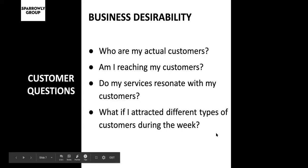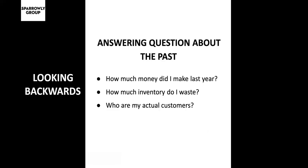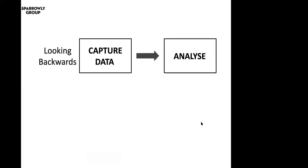So these are all really great questions, but how can we use data to answer them? Well, to help us with this, we're going to break up our questions into two different types. The first type of questions are those that reference the past — answering questions that require us to look backwards. Questions like how much money did I make last year, how much inventory do I waste, who are my actual customers — these are all questions about the past. Answering these types of questions requires two steps: first, capturing data, followed by analysing data. The trick is that you need to capture data before you can analyse it. Fortunately, you are already likely capturing data across different aspects of your business through the various tools that you already use.